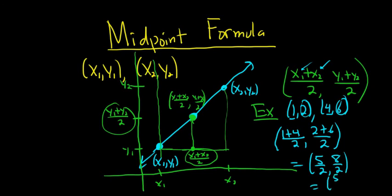Well, that's 5 over 2, and then 8 over 2 is 4. So again, to find the midpoint, just add the x's and divide by 2, and add the y's and divide by 2. That's it.